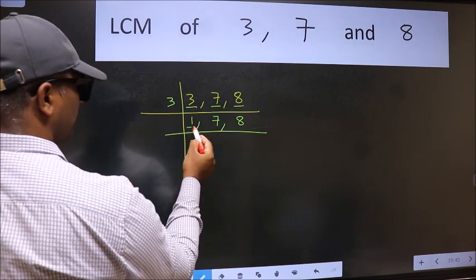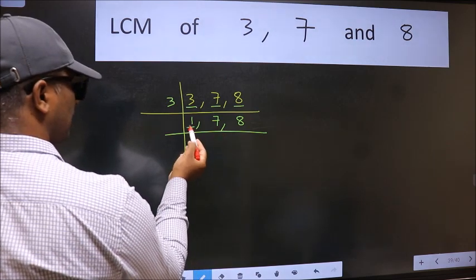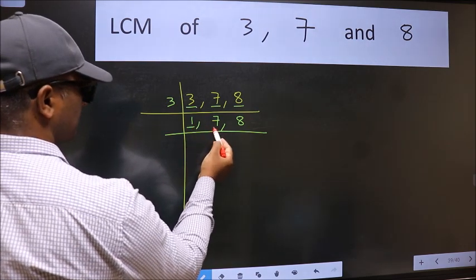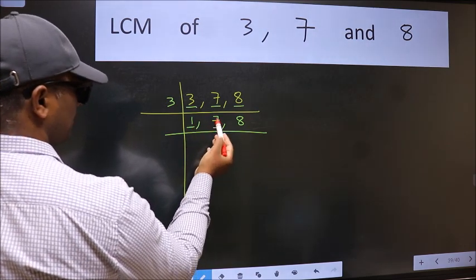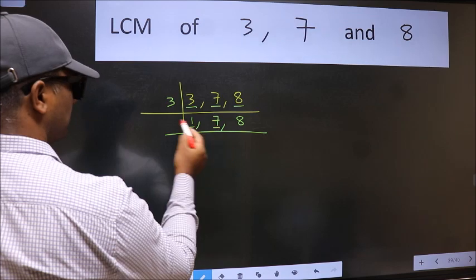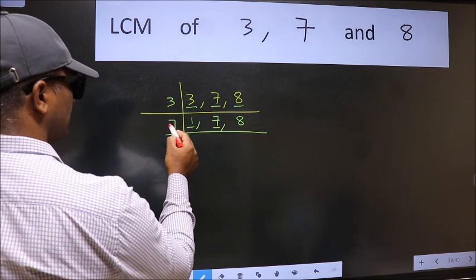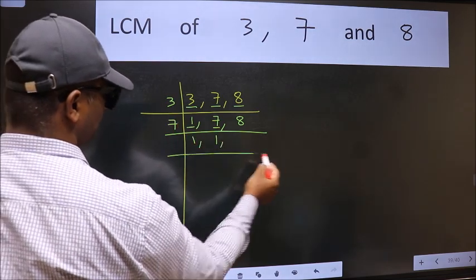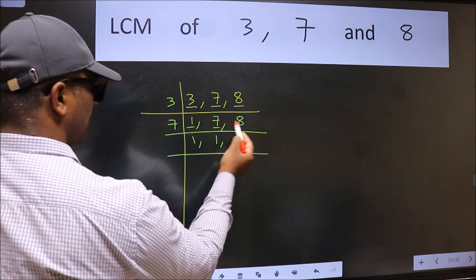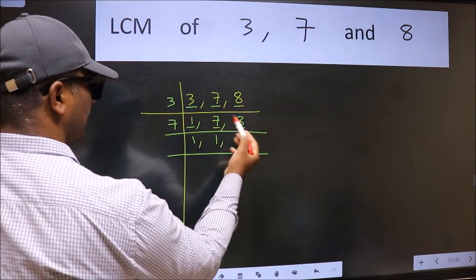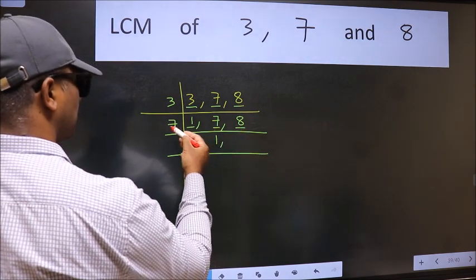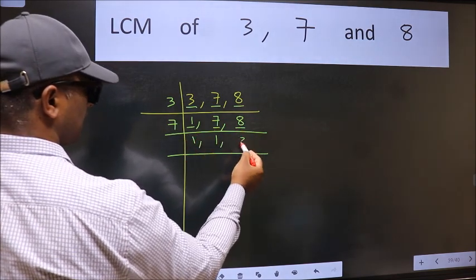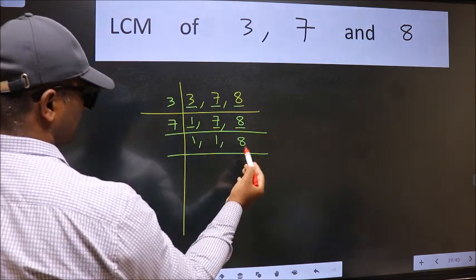Now we got 1 here, so focus on to the next number 7. 7 is a prime number, so 7 divides by 7. The other number 8 is not divisible by 7, so we write it down as it is.